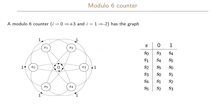We look again at our modulo 6 counter and apply the reduced dependency state assignment approach. This counter has six states s0 to s5. If input i is zero we go three steps forward, adding three modulo 6. If input i equals one we subtract two, which is the same as adding four modulo 6. For example, in state s0 with a zero input we go to s3, and with a one input we go to s4.